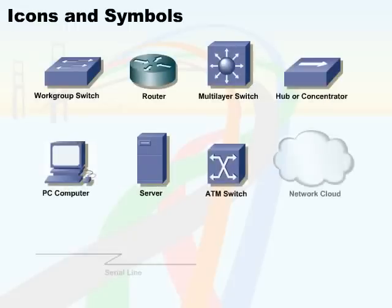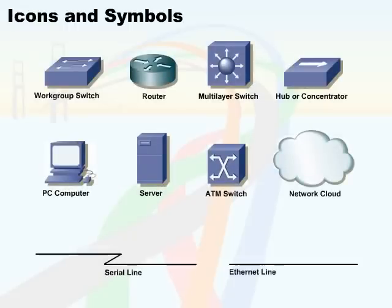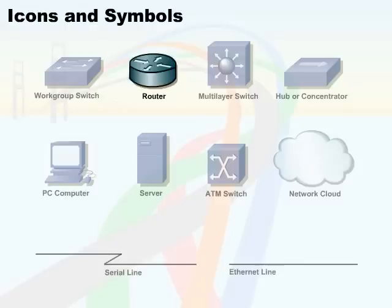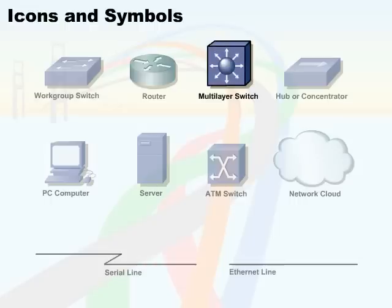We're going to use a series of pictures and labs to make sure that you have a good understanding of all of these different technologies. These are some of the icons and symbols we're going to be using throughout the course. Number one, we have the workgroup switch — this is a universal icon used for a switch, typically functioning at layer 2 of the OSI model. Number two, the universal symbol for a Cisco router is also very important. And number three, anytime we have an element of layer 3 of the OSI model, we're going to see an icon like the one represented here.